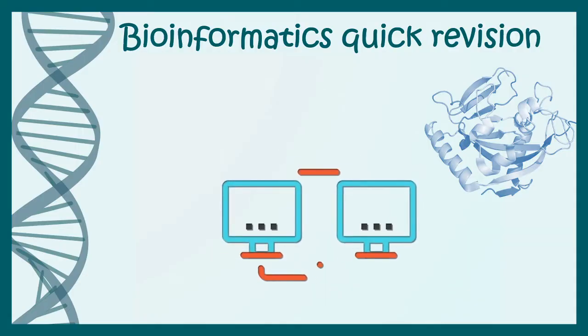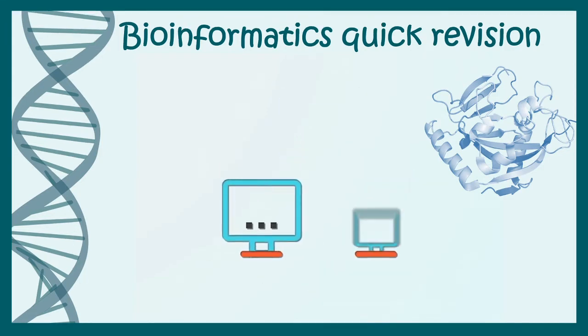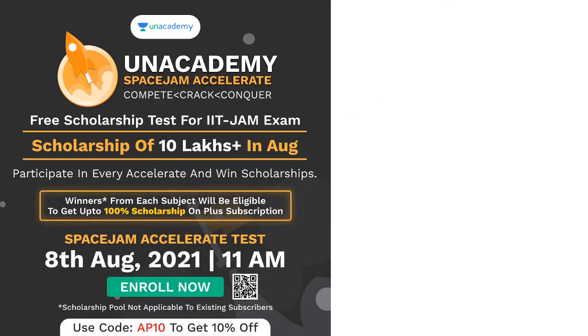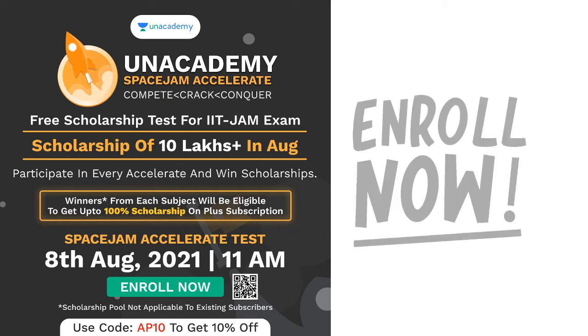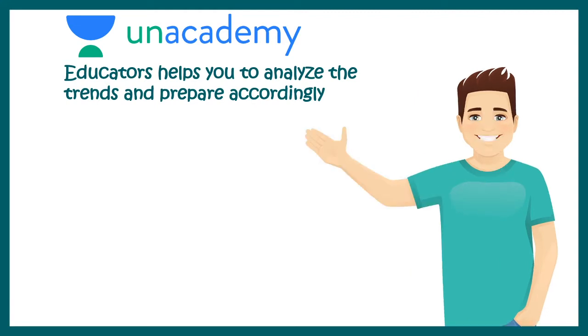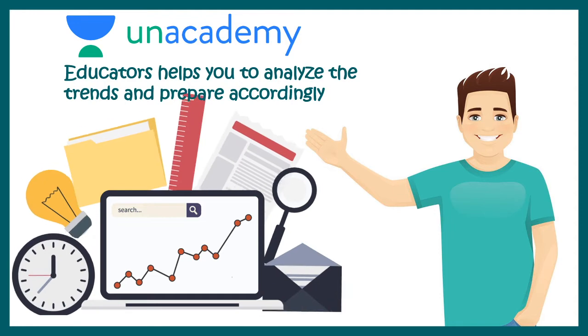In this revision series we are revising several concepts of bioinformatics. If you are confused about what to read for comprehensive exams and entrance exams, you can take a look at Unacademy's learning app. Recently they have announced 10 lakhs of fellowship for August. You can appear for this fellowship by giving this exam, Space Jam Accelerate, which is happening on 8 August 2021 from 11 AM. All the links are provided in the description. Download the app, click on the link, and use my code AP10 to get free access.